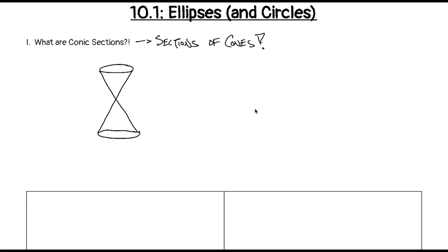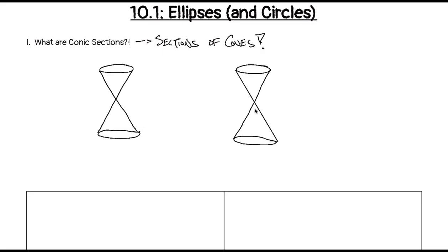It kind of looks like an hourglass, except in the middle they cross at a point. Basically you have two ice cream cones with the bottoms attached to each other. To draw it: draw an oval shape, then from one end draw a diagonal line, from the other end another diagonal line — like an X underneath — then connect the bottom two parts with another oval.